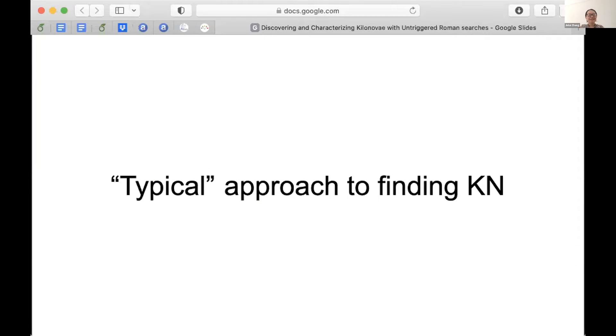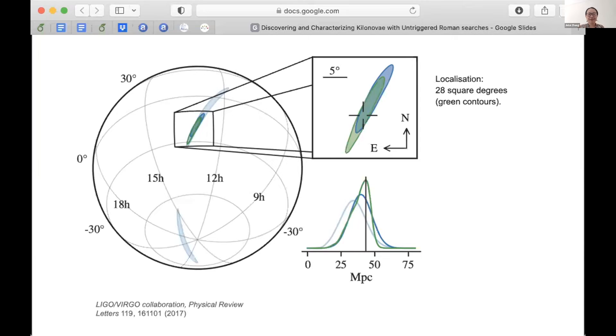In this short talk, if there's anything that I want you to take away from it, it's that we should definitely be doing untriggered searches for kilonova. So this is my white kilonova slide. So what is the typical approach to finding a kilonova? I think this might be covered partially already in some previous talks, so I'll go through this relatively quickly. I put typical approach to finding a kilonova because, as we all know, there's only one spectroscopically confirmed kilonova, GW170817. So that's why typical is a bit strange to say.